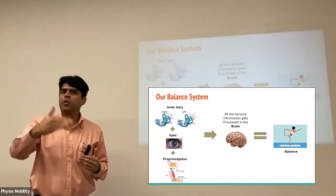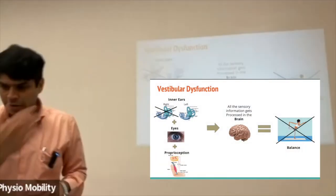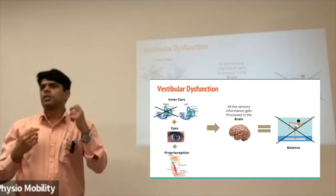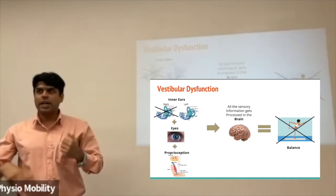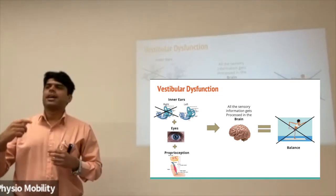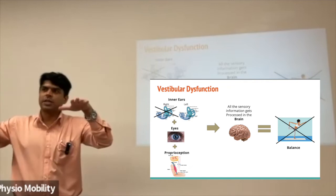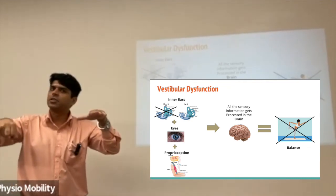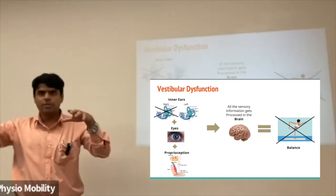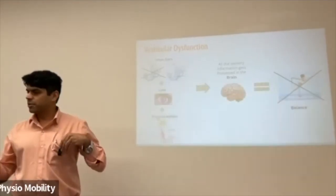The issues arise when one of these starts to misbehave. If the right inner ear starts to misbehave, only the left inner ear, the eyes, and proprioception are left giving information to the brain, which can cause imbalance because the even flow of information has been disrupted. One side is not sending the information it was, and all of a sudden something is missing — and that something missing becomes the problematic area where we come in.